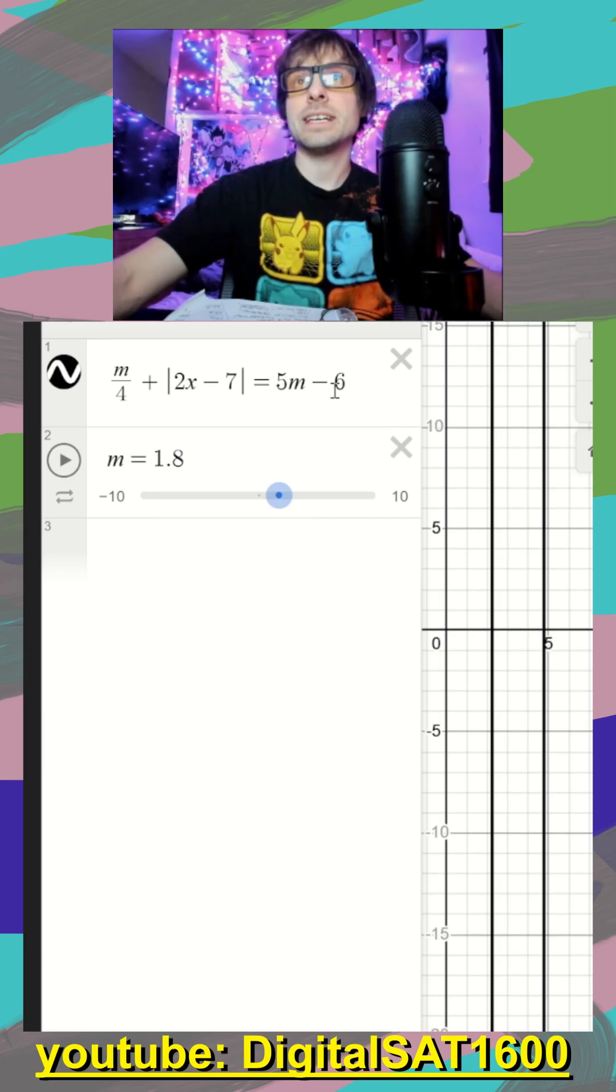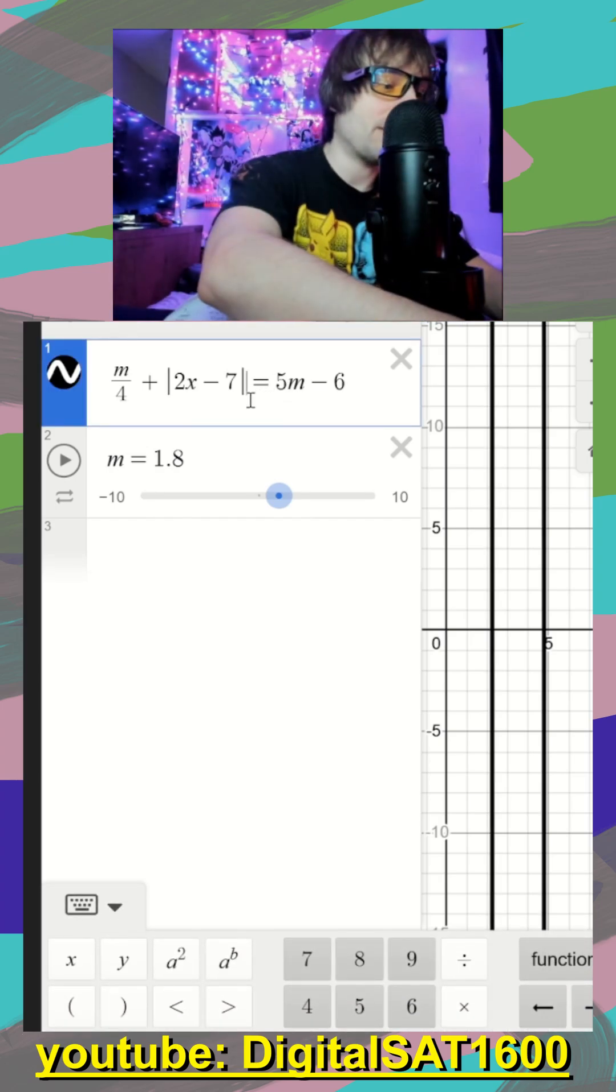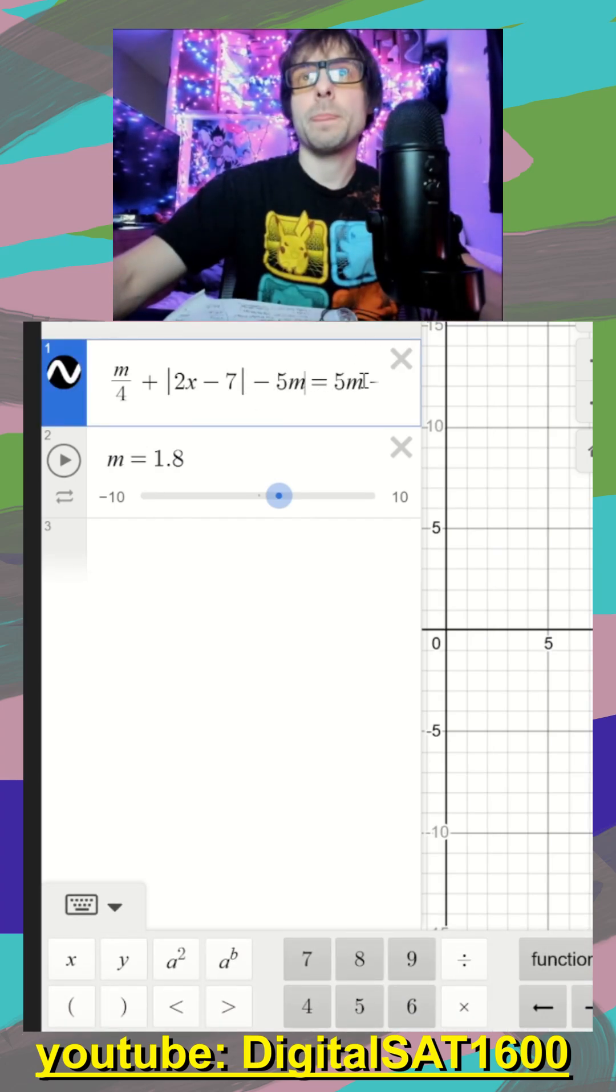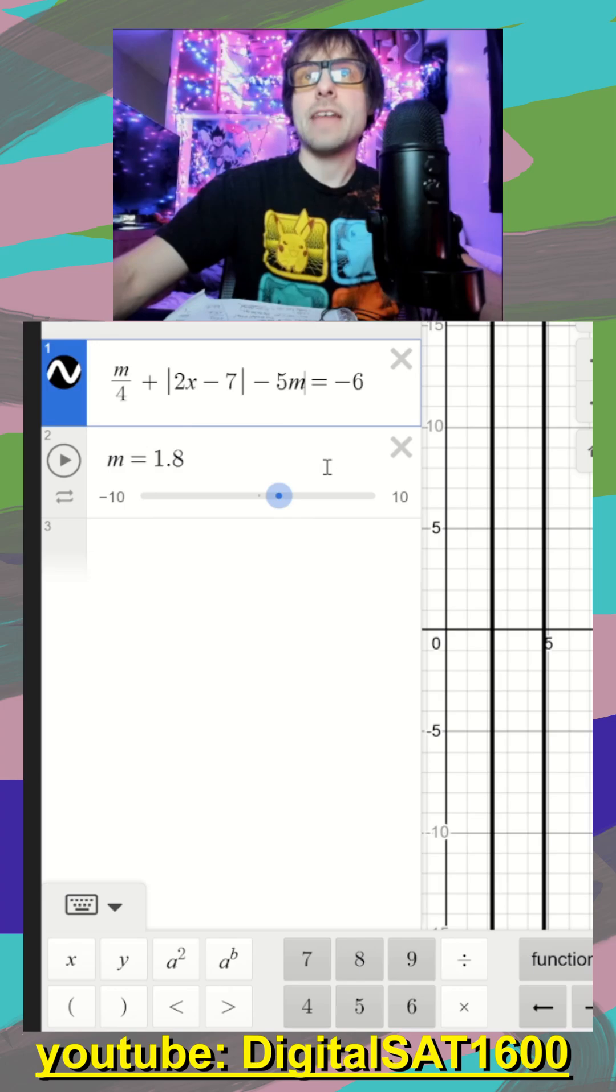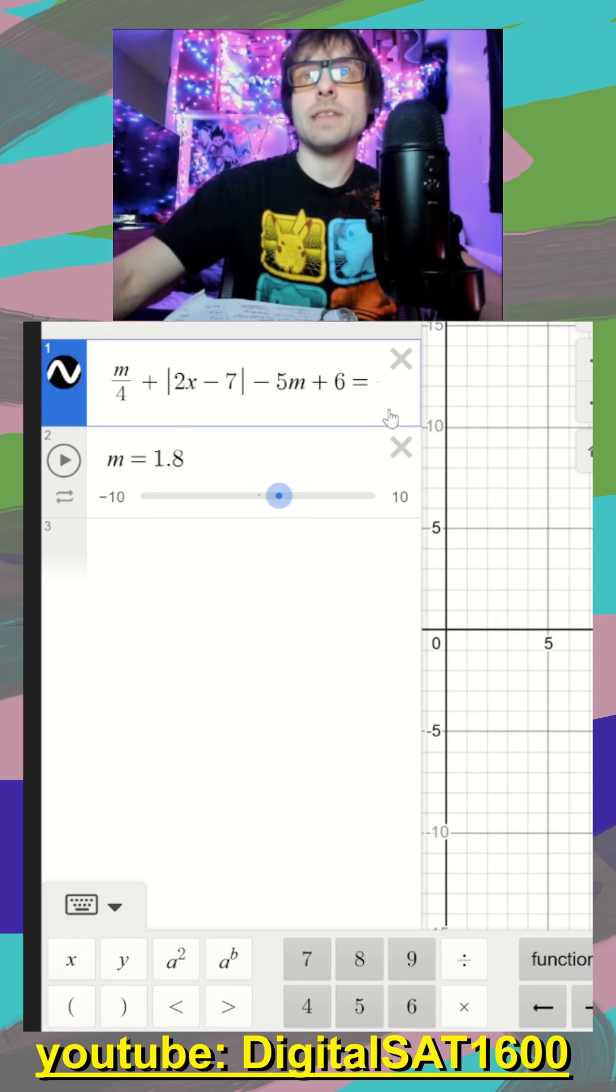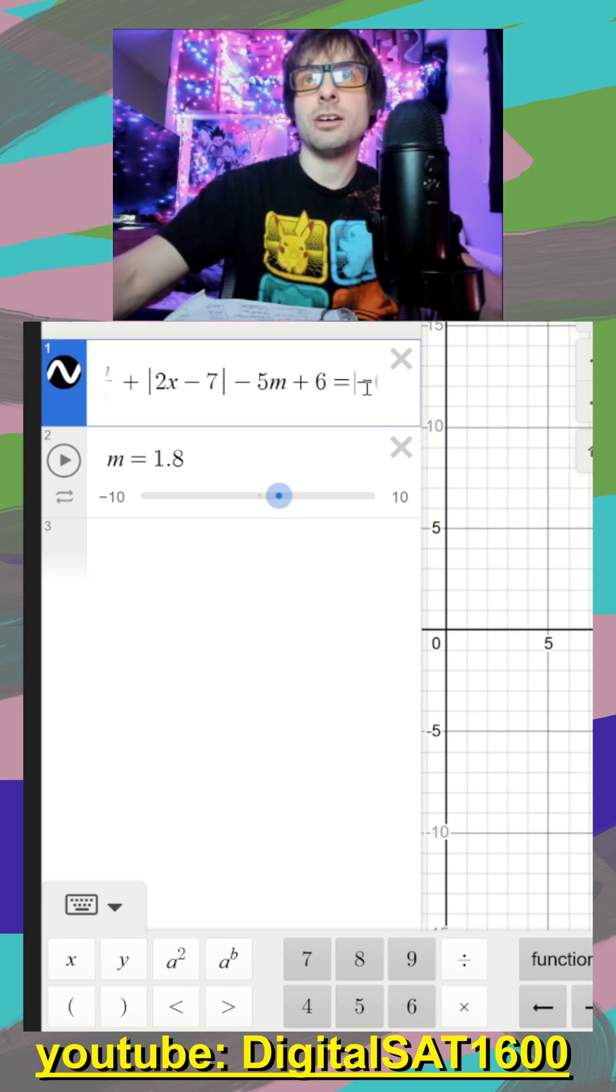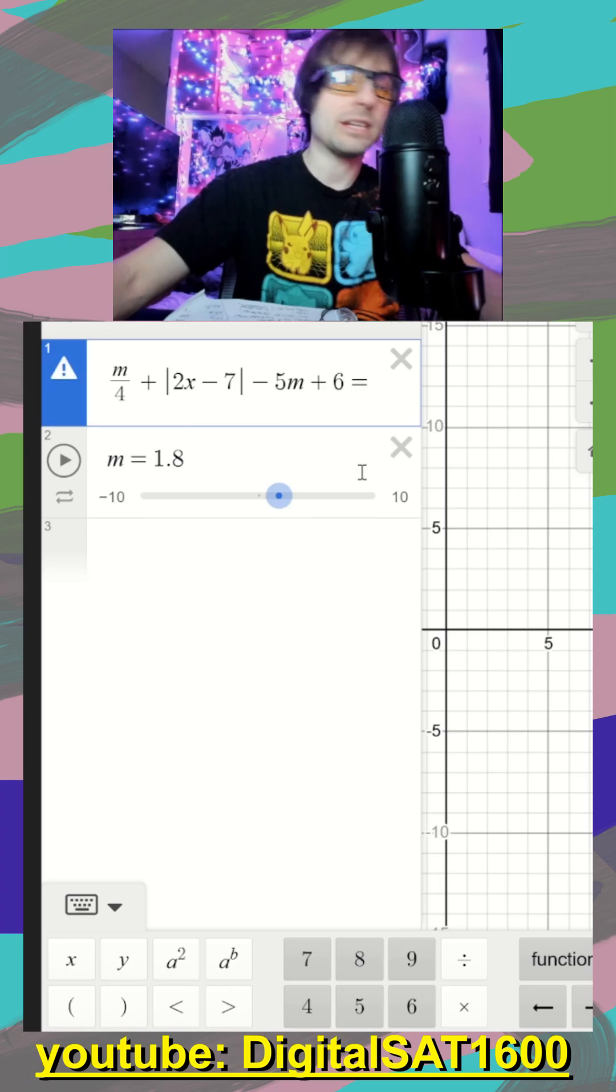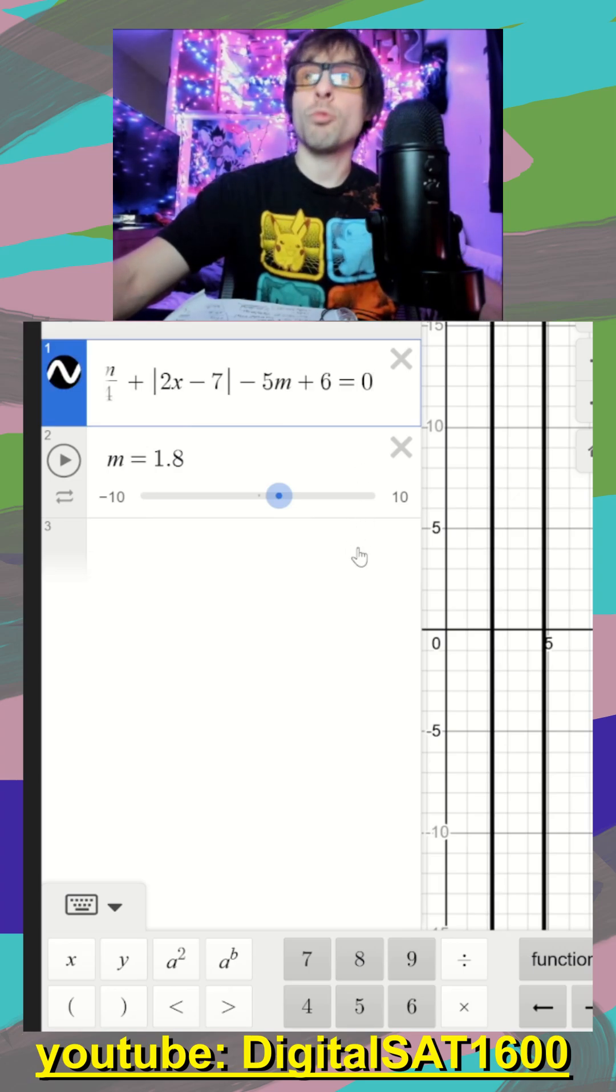It's a really good habit to get everything to one side of your equal sign. So if I subtract 5m over, that would get rid of this 5m. And then if I add six over, that would get rid of this six on this side, and it would be equal to zero.